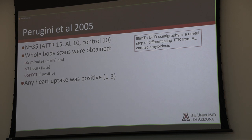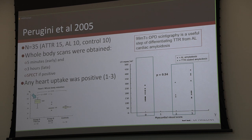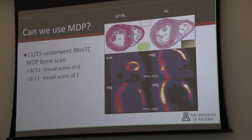Let's look at why the guidelines are the way they are. A small study from 2005 looked at 15 ATTR patients, 10 AL patients, and a control group. They did 5-minute images and delay images at 3 hours, and called any cardiac uptake positive. Group A with ATTR was significantly higher in uptake than the rest, and AL was equal to control — showing you can actually delineate those two diseases. Interestingly, in this extremely small cohort, there was no grade one.